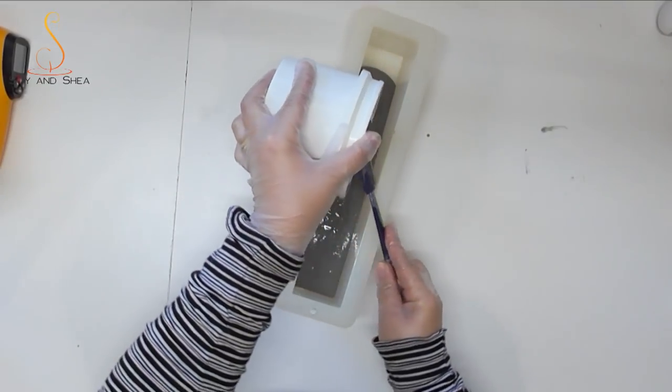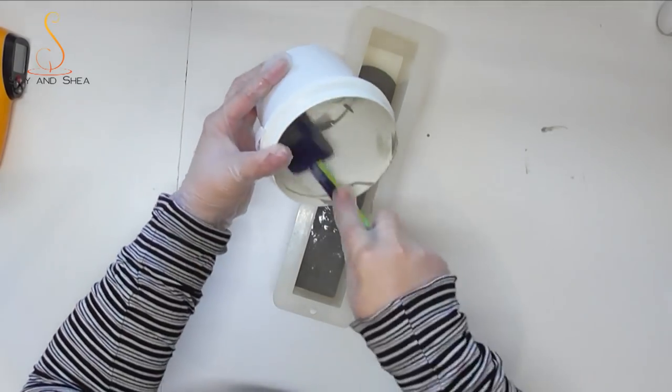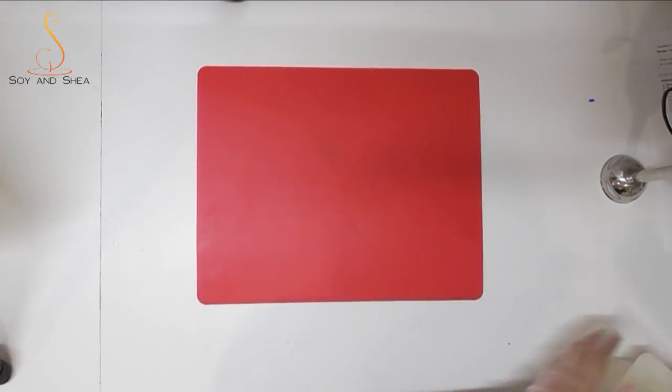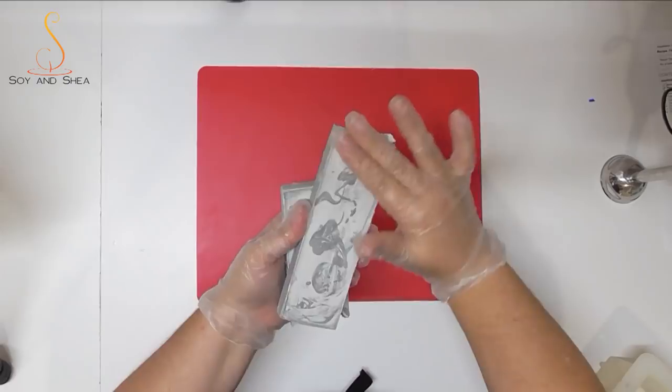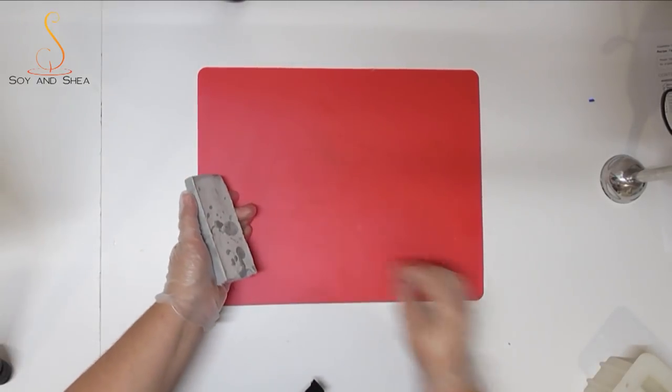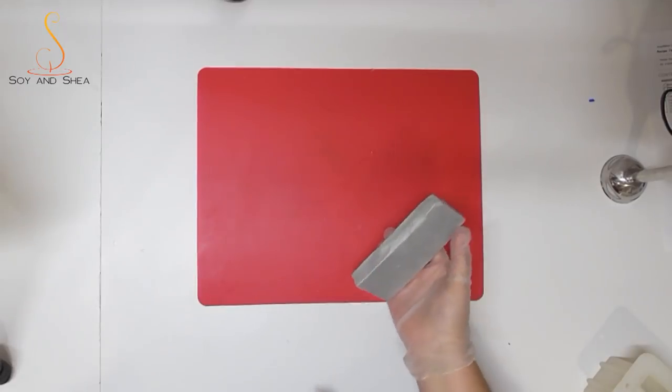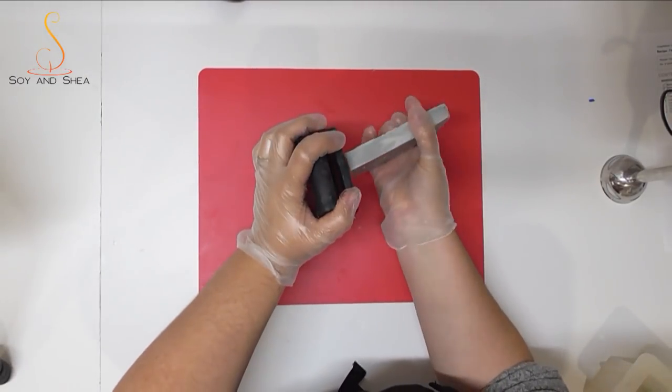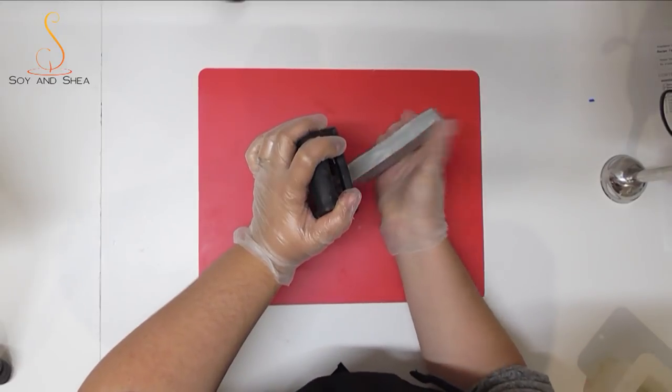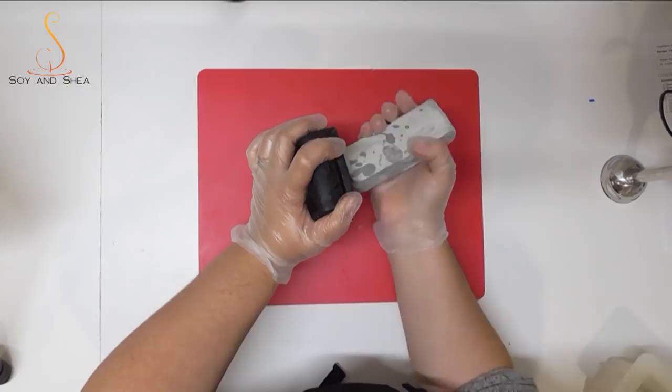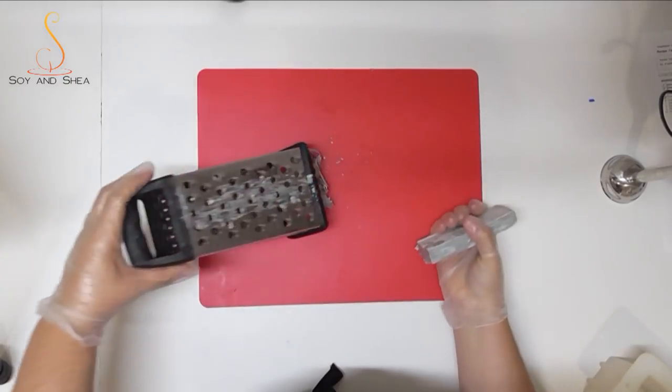So on to the next bit of the soap. I have unmolded this—I did get a bit of soda ash on the top there, but I'm not too worried because we're going to actually grate this up to go inside the next soap. So I've just got my grater here, and this one is specifically used in my workshop. All I'm going to do is just run it up and down the grater as you would with cheese and grate it into some little pieces.